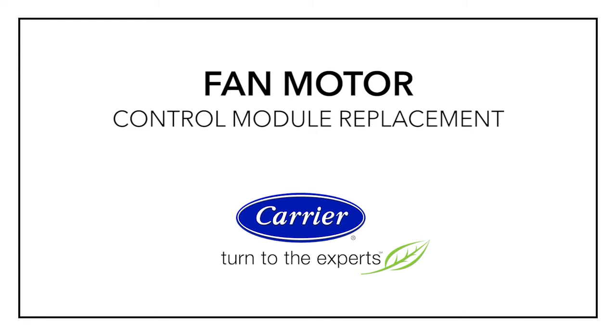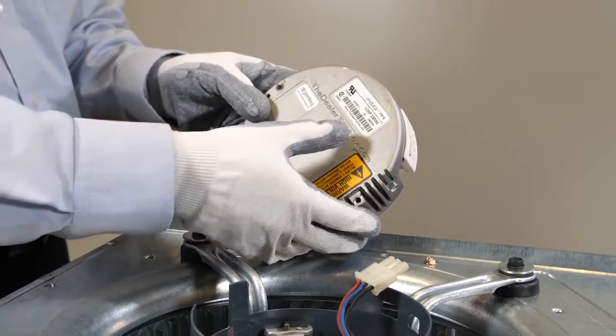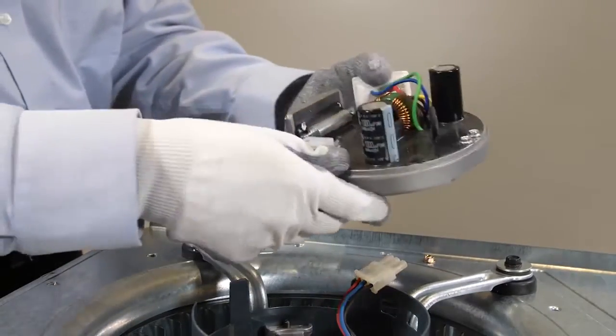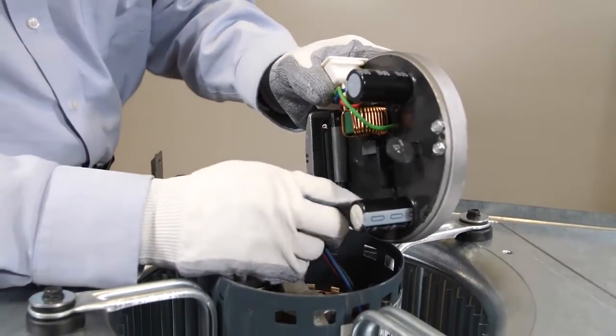To find the appropriate control module replacement part number, reference the unit model number. You could use your Service Tech app to scan the barcode on the unit. Once you have the proper replacement module, connect the three wire plug.